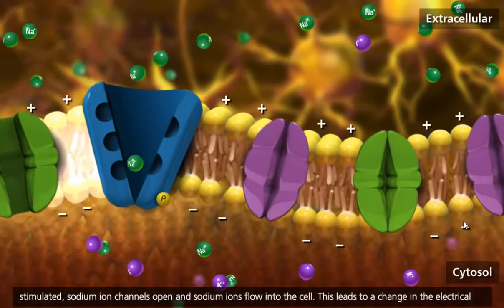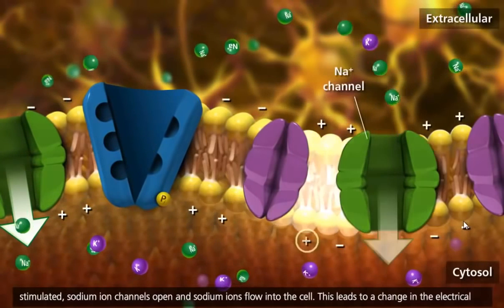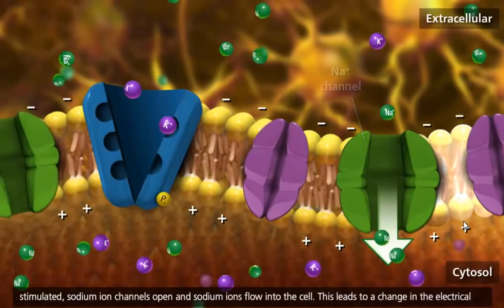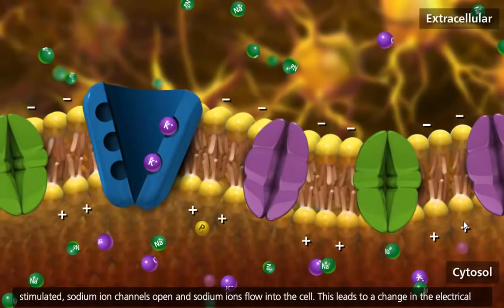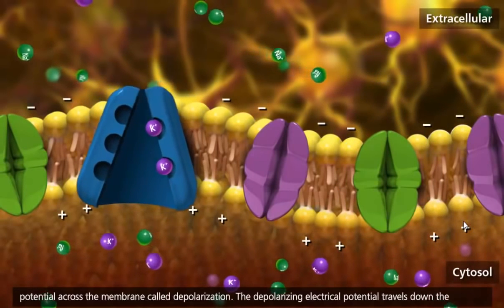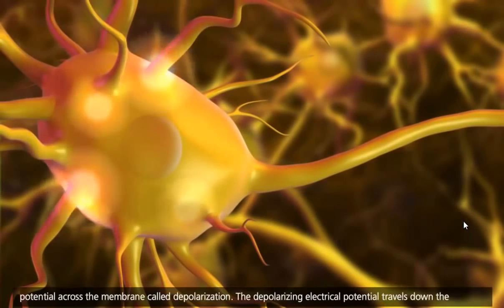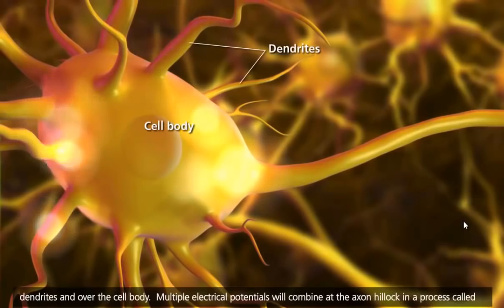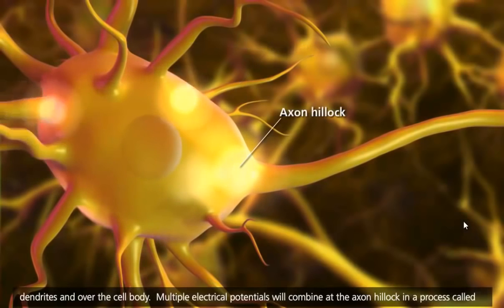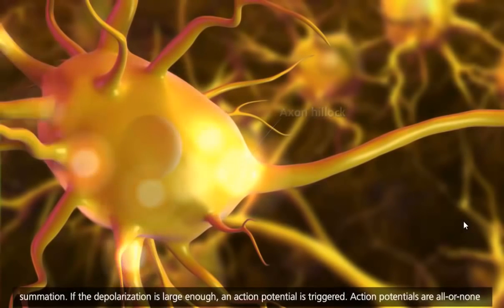When a neuron is stimulated, sodium ion channels open and sodium ions flow into the cell. This leads to a change in the electrical potential across the membrane called depolarization. The depolarizing electrical potential travels down the dendrites and over the cell body. Multiple electrical potentials will combine at the axon hillock in a process called summation.